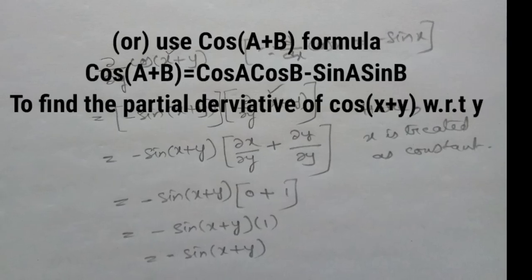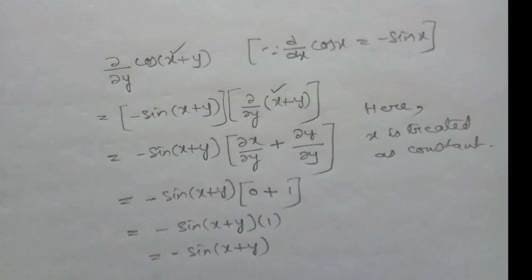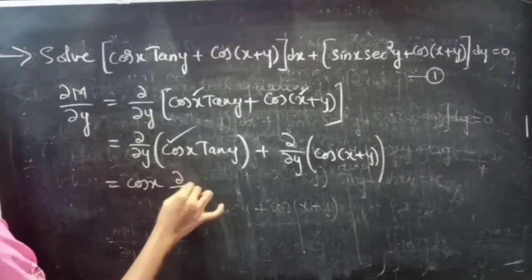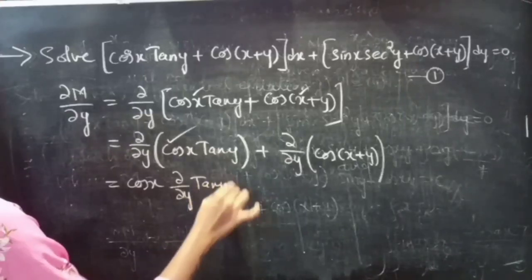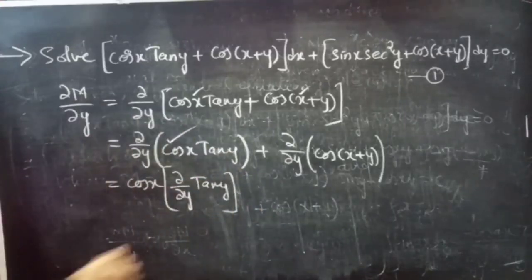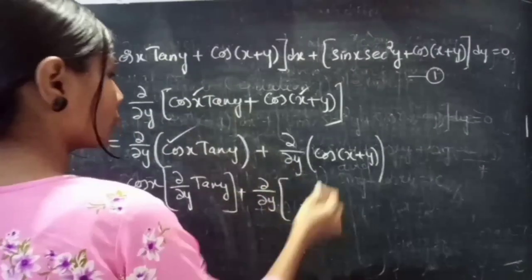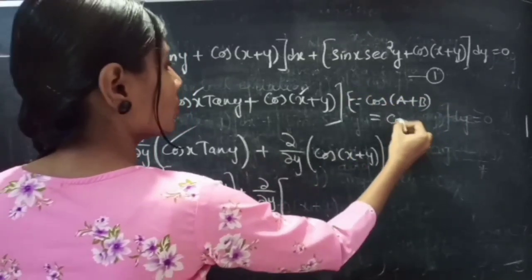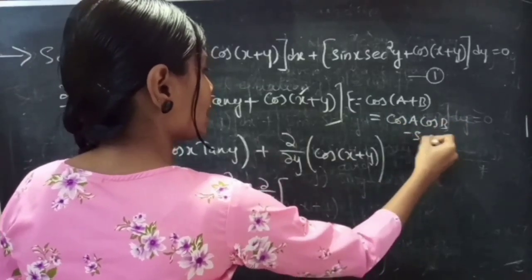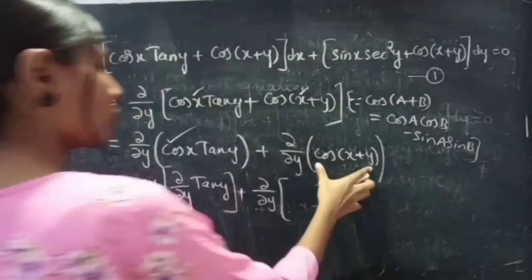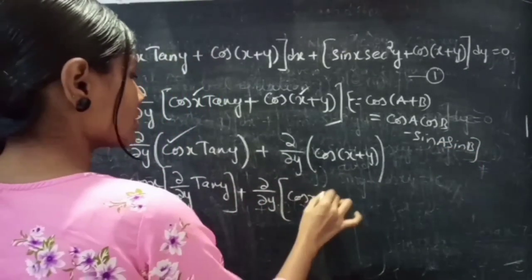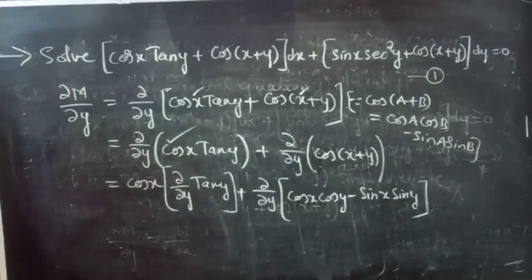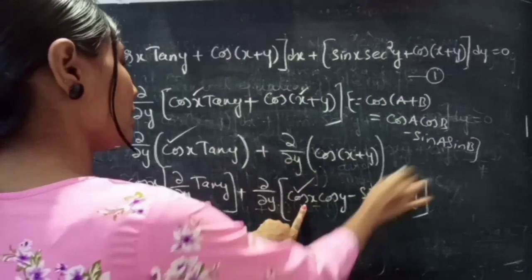So this equals ∂/∂y of (cos x · tan y) + ∂/∂y of cos(x+y). Here cos x is constant, so we take it out and find the partial derivative of tan y with respect to y. Also, cos x and sin x will be treated as constants.